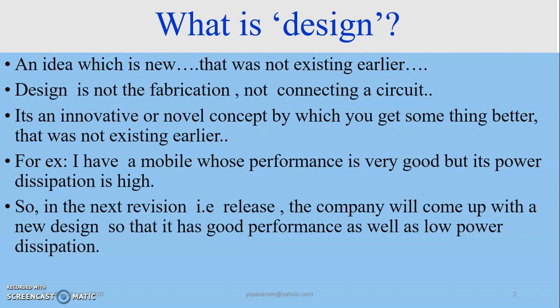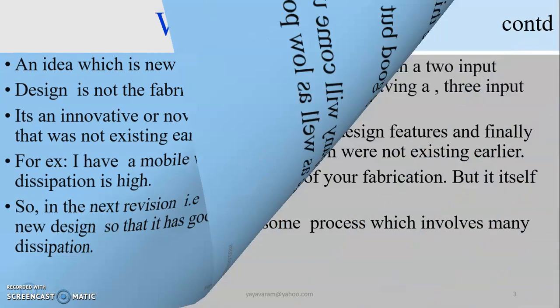For example, assume I have a mobile whose performance is very good but its power dissipation is high. So when people complain to the vendor, in the next release the company will come up with a new design so that it has good performance as well as low power dissipation.